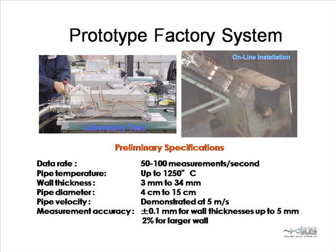The left photo shows the measurement head being assembled in the lab. The head has provision for water cooling and an air purge. The right photo shows the head mounted in position on the line, in this case at 45 degrees. Note that measurements can be made on tubes at a temperature above 1000 degrees and moving 5 meters per second.